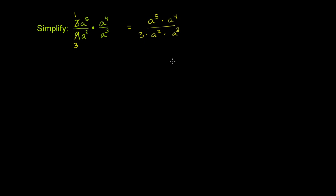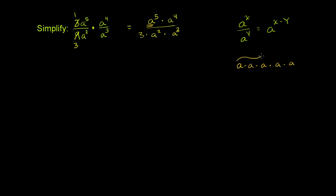There are multiple ways to simplify from here. One approach is the quotient rule — the idea that a to the x over a to the y equals a to the x minus y. To understand why, consider a to the fifth over a squared. A to the fifth is a times a times a times a times a, and a squared is just a times a. Both numerator and denominator are divisible by a times a.